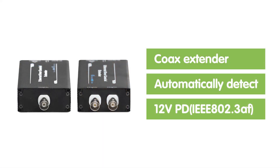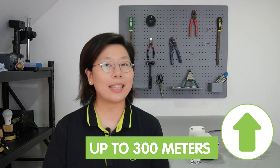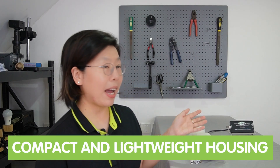Ethernet over coax extenders offer a simple way to upgrade existing network infrastructure by transmitting Ethernet signals over coaxial cable. By leveraging the benefits of coaxial cable, you can easily extend the distance beyond 300 meters and reduce interference from crosstalk and noise. It automatically detects and recognizes IEEE 802.3AF power devices with a maximum power output of 12V DC. It also supports transmission distances up to 300 meters with a data transfer rate of 100 Mbps, and features a compact and lightweight design well-suited for space-constrained spaces.